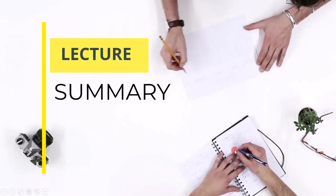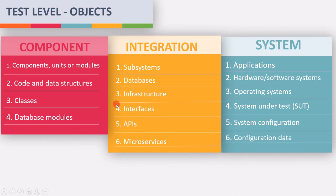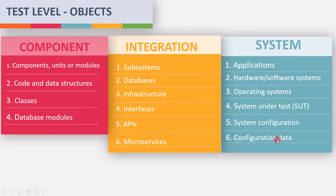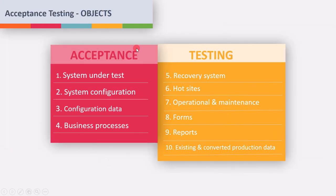Let's quickly summarize the important points. Test objects of component testing are: component, unit, modules, code, data structure, classes, and database modules. Test objects of integration testing are: subsystems, databases, infrastructure and interface, APIs, and microservices. Test objects of system testing are: applications such as hardware or software system, operating system, the system under test, and system configuration and configuration data. For acceptance testing test objects, you can go ahead and pause the lecture and read it by yourself.